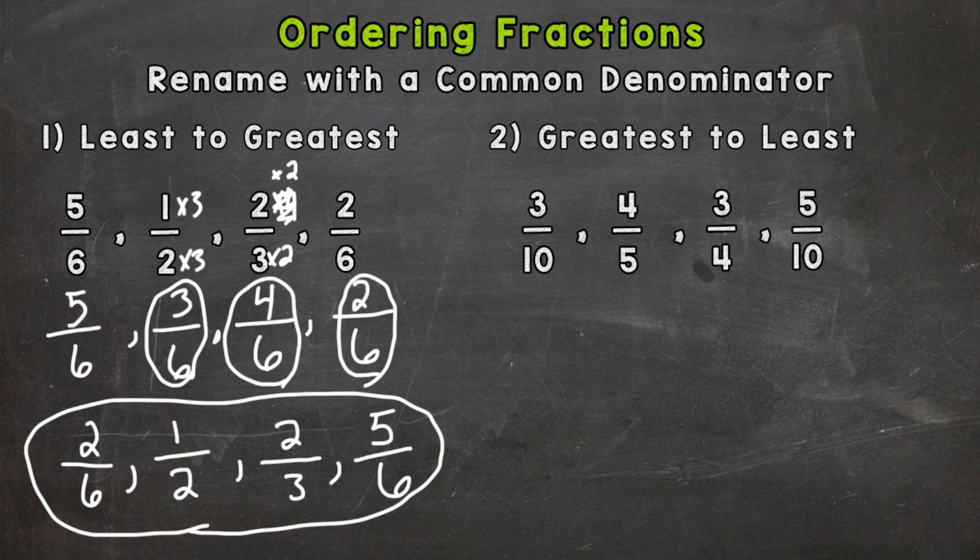So let's go to number 2 where we're going to go greatest to least. But it's the same process. Find a common denominator, rename, and then put them in order.